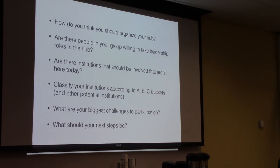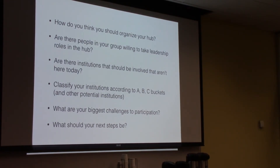Challenges discussed include funding — if the group goes to a model where they have to pay, it's unclear how that would break down fairly among institutions. There's also the geographical breadth of the state, with fewer large institutions compared to states like North Carolina. However, there's a potential bonus in that starting from scratch with some institutions means no pre-existing inconsistencies, and the A-group institutions have already established standardization practices they can apply.